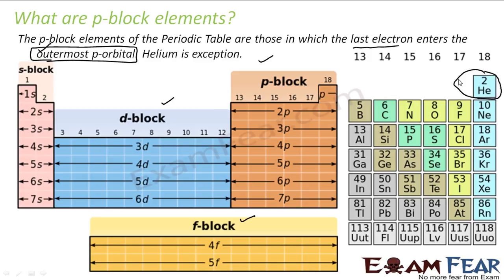Helium is the exception here. Helium is considered to be in P-Block, but it doesn't have any P-orbital. There is a debate on whether Helium belongs to S-Block or P-Block — some textbooks say S-Block, some say P-Block. In this course, we will consider Helium as P-Block. The general classification is: last electron in S-orbital → S-Block; P-orbital → P-Block; D-orbital → D-Block; F-orbital → F-Block. Helium is the exception because its properties match those of group 18 elements, which are in P-Block.